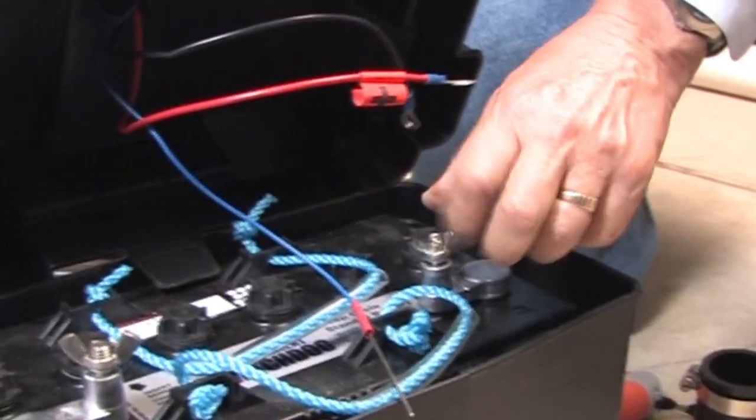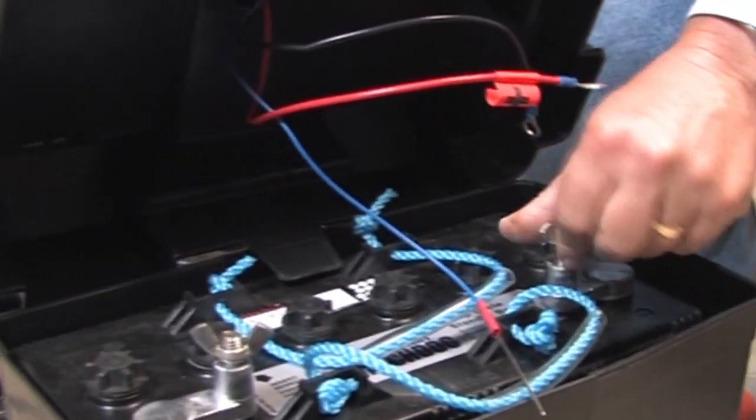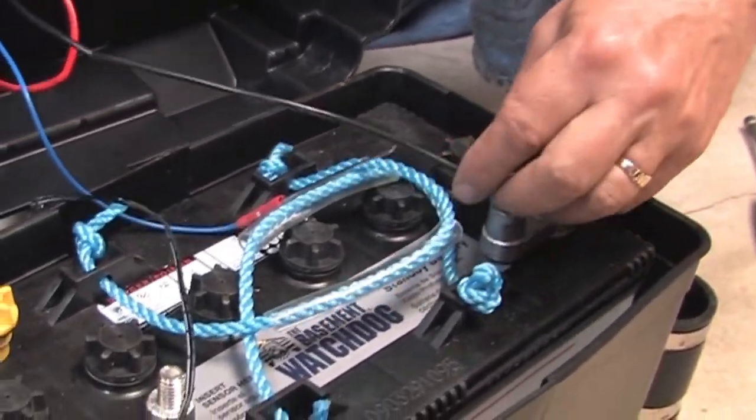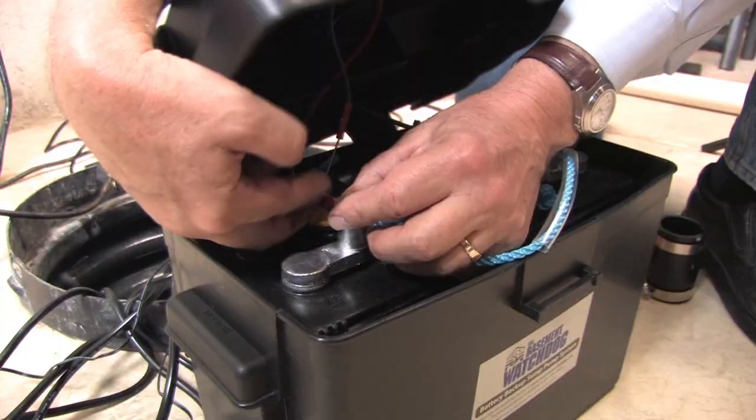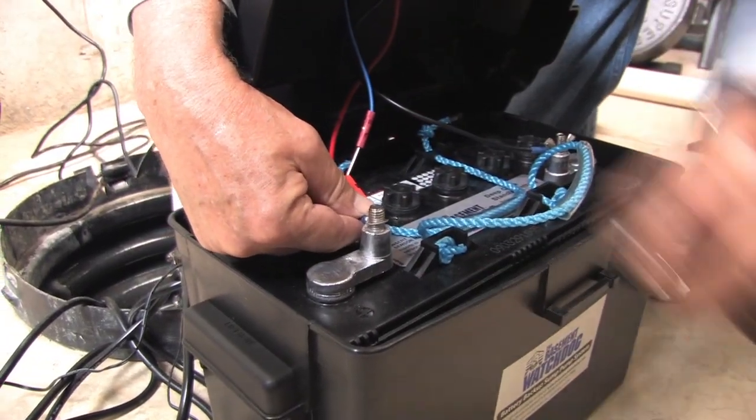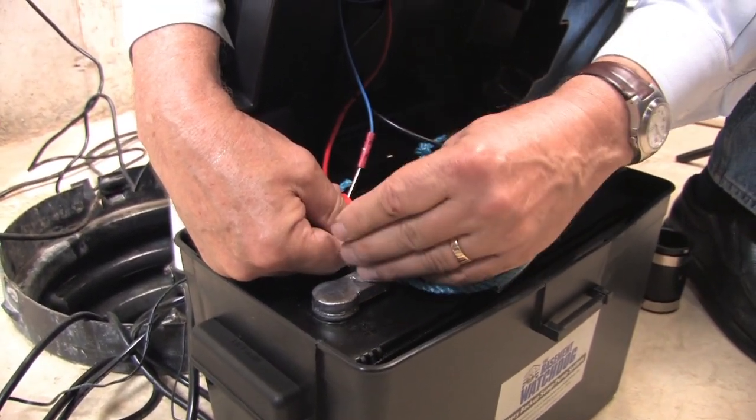To connect the battery, remove the wing nuts from the battery terminals. Connect the black wire to the negative post and then the red wire to the positive post. Do not attach the wires to the wrong posts. Replace the wing nuts and then tighten them.